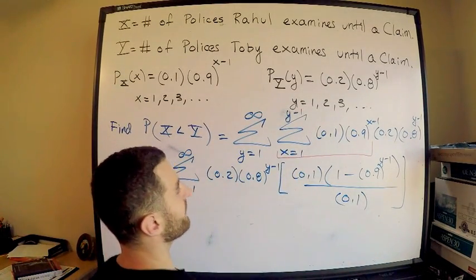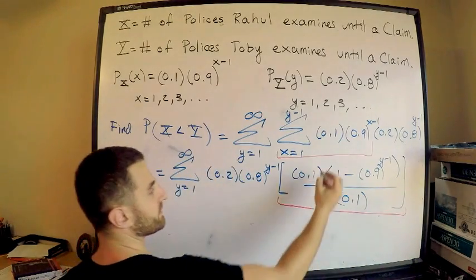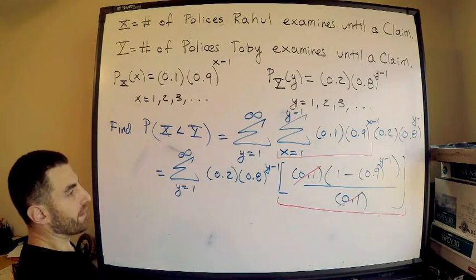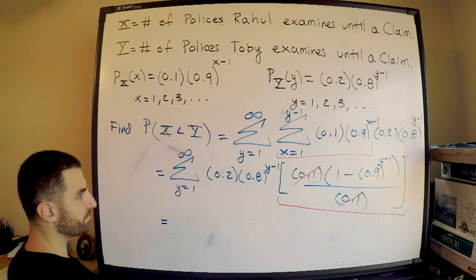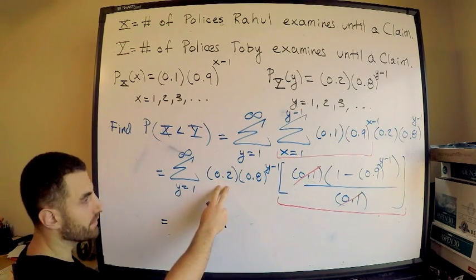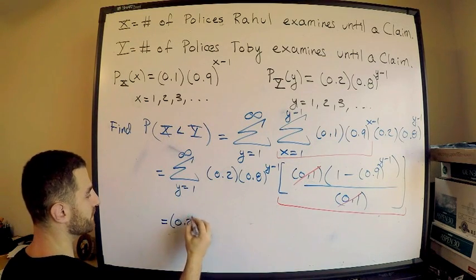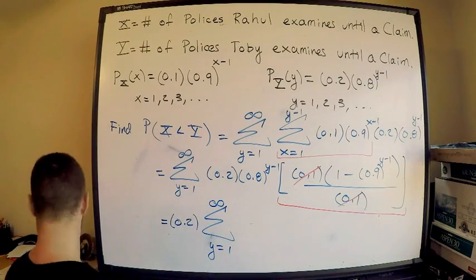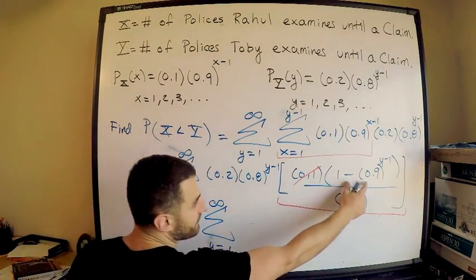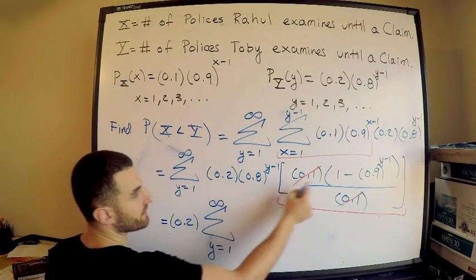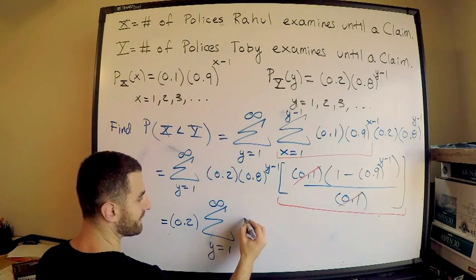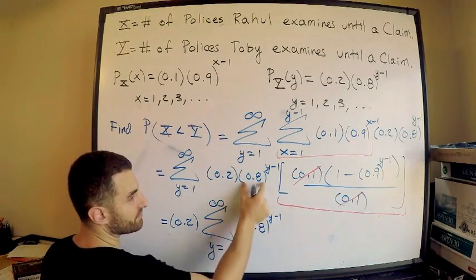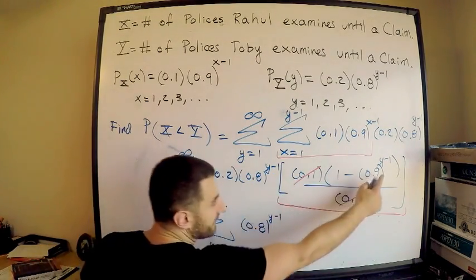These guys cancel. So hopefully you see what I've done. This red here is exactly this red here. So notice, gone and gone. Not too bad. Now I'll evaluate this sum and I'll be done with it. This is equal to - let's pull out this 0.2, you don't have to, I'm just going to - 0.2 times the sum from Y equals 1 to infinity of this. Now I have this piece and I also have this one, so I'm going to distribute this through here. This is going to give me 0.8 to the Y minus 1.